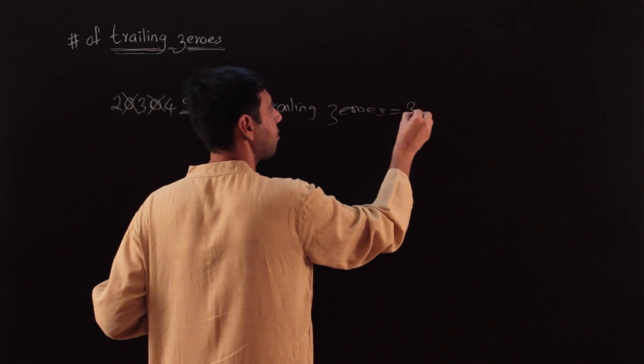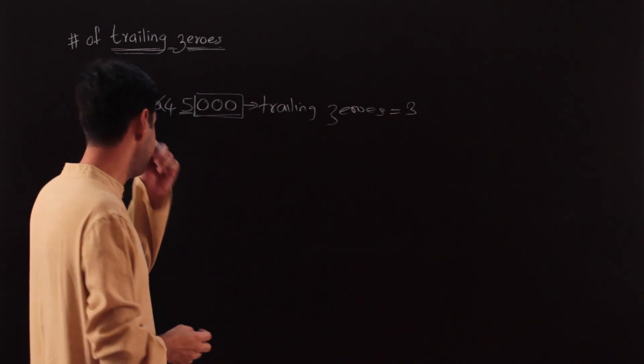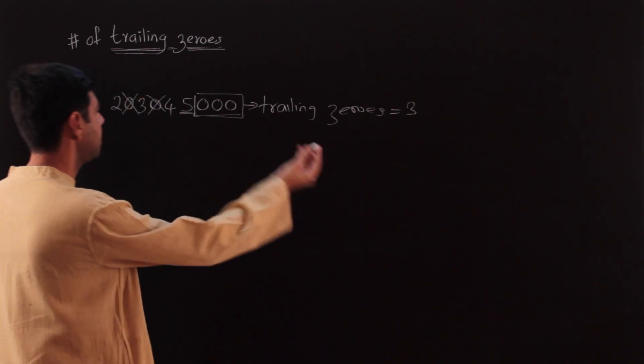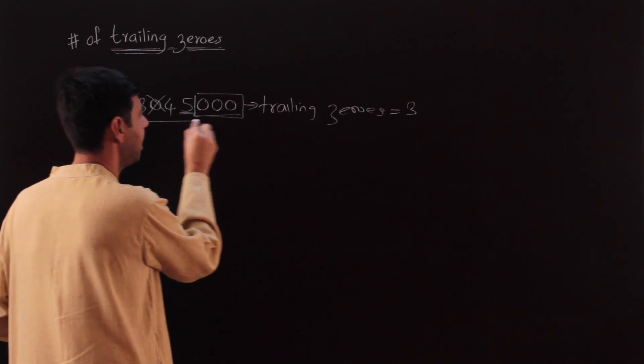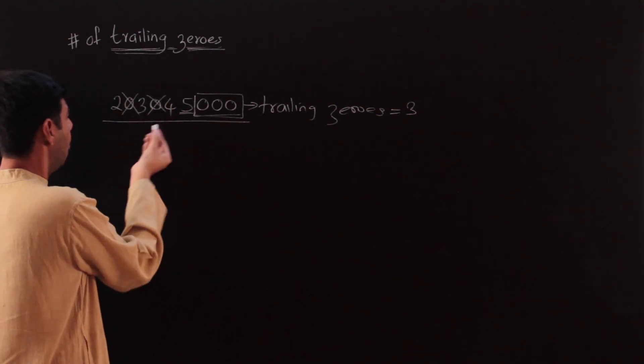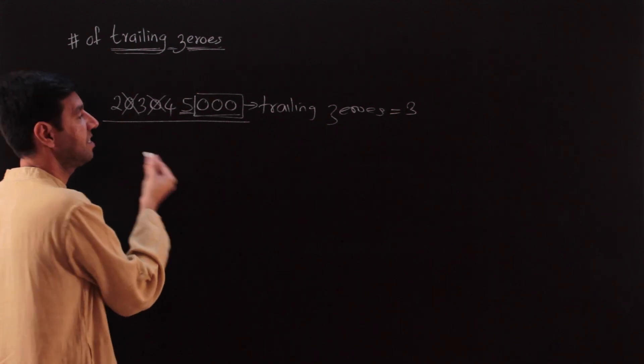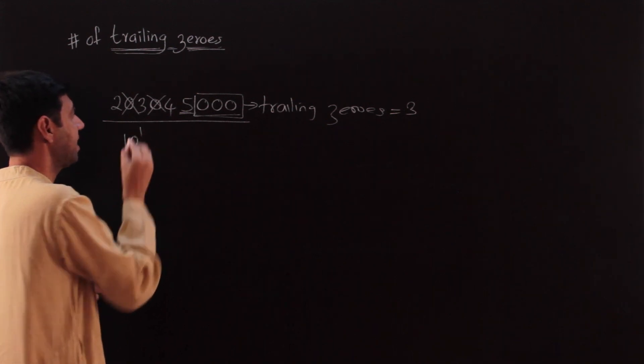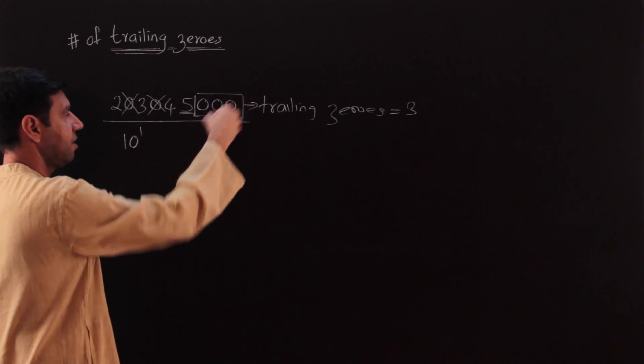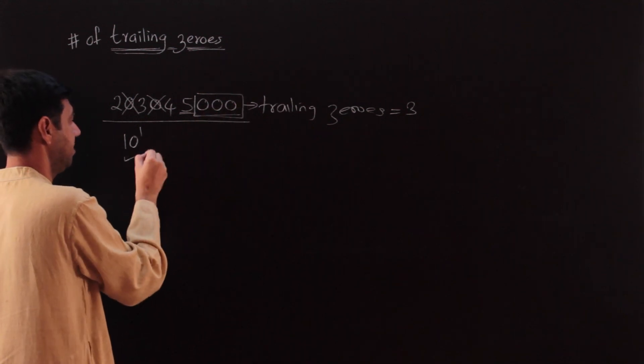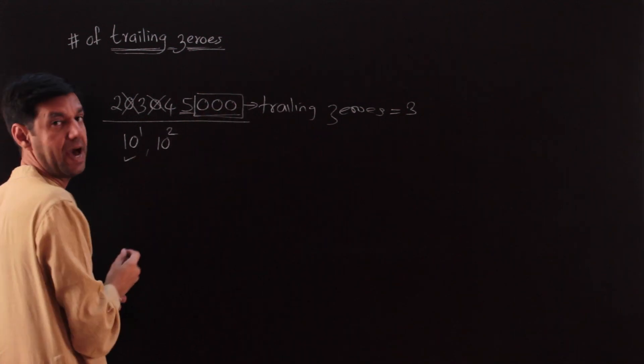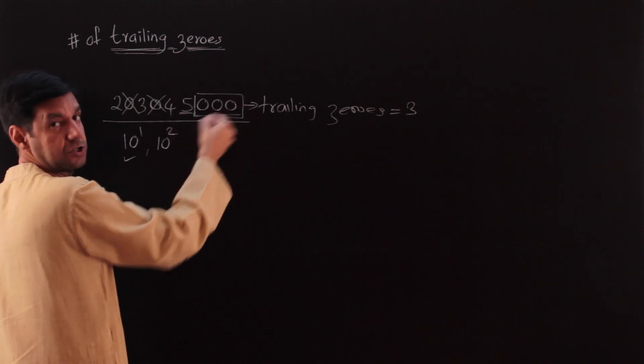The trailing zeros is equal to three in this case. We could also say that this original number - by what power of 10 is it divisible? Is it divisible by 10 raised to 1? Yes, the zero will cancel out. Is it divisible by 10 square as well? Yes, two zeros will cancel out.